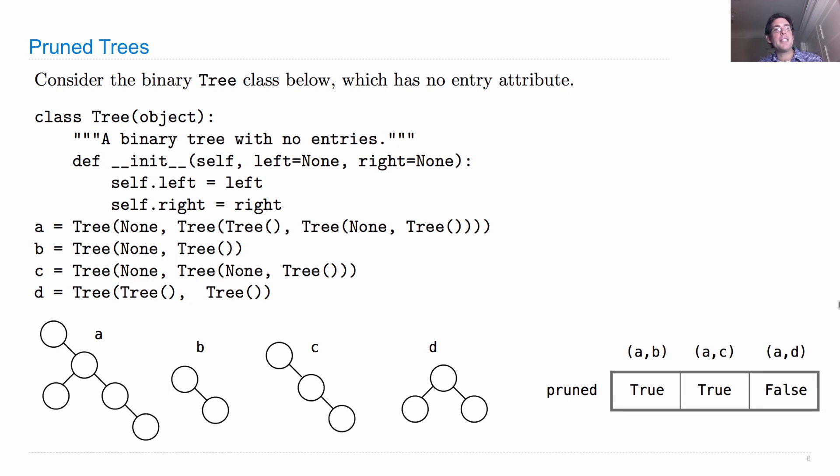Consider the binary tree class below, which has no entry attribute. So what's going on there? Well, the tree that we've looked at most so far has three different attributes: an entry, a left, and a right.